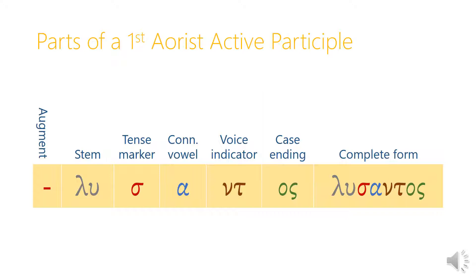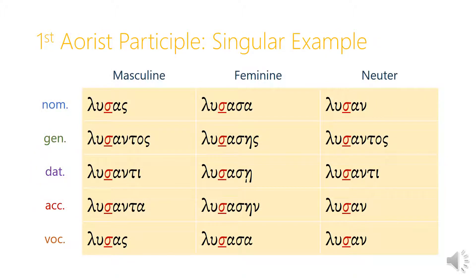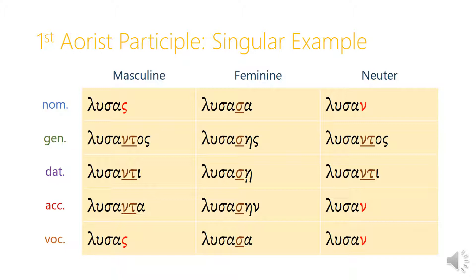Let's look at the full range of forms for luo. Just like adjectives, participles can be masculine, feminine, or neuter, and can come in any of the five cases. Even though they're verbs, they have features of case, gender, and number. In every single form across the chart, the first aorist participle begins with the verb stem, then we have the sigma tense marker, then the alpha connecting vowel, then the voice indicator — which tells us these are all active participles. The voice indicator in the masculine and neuter active is nu-tau, so the basic core form will be lusant- and then we add the endings. For the feminine, the voice indicator is just sigma, so the core is lusas- plus the ending.